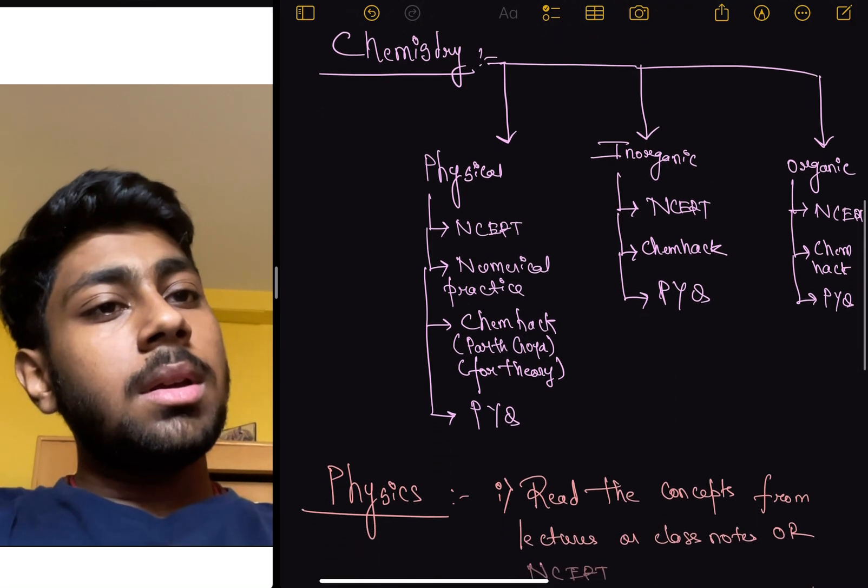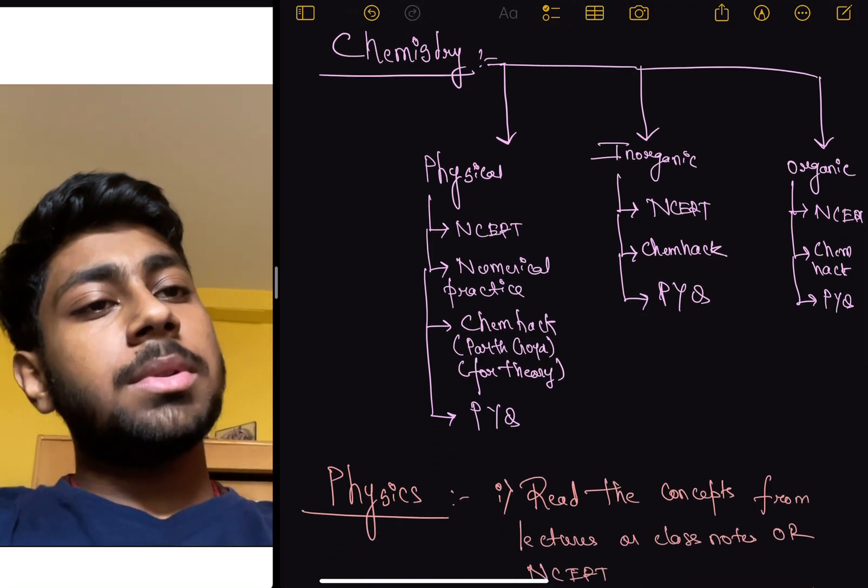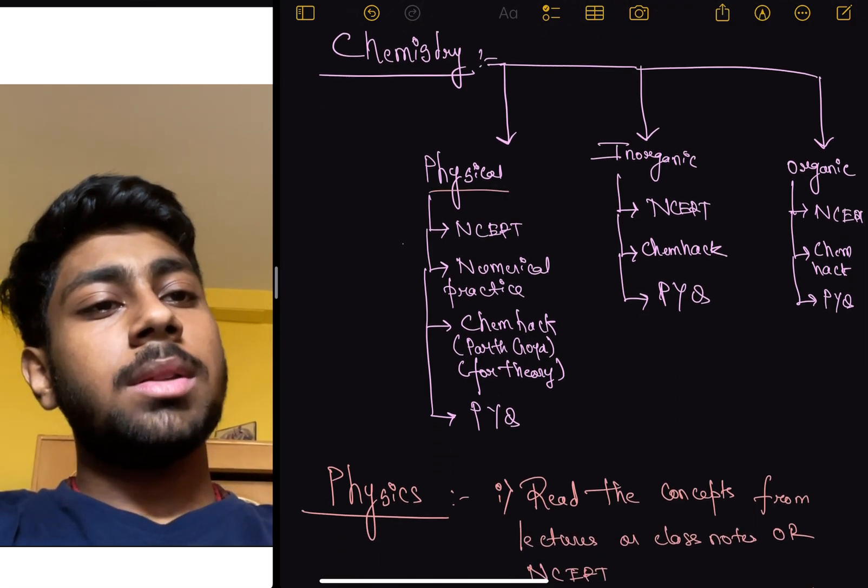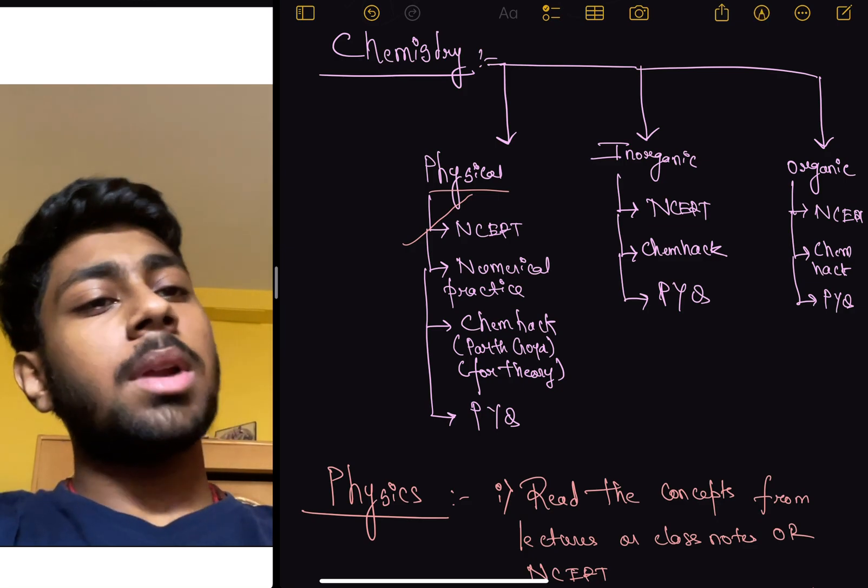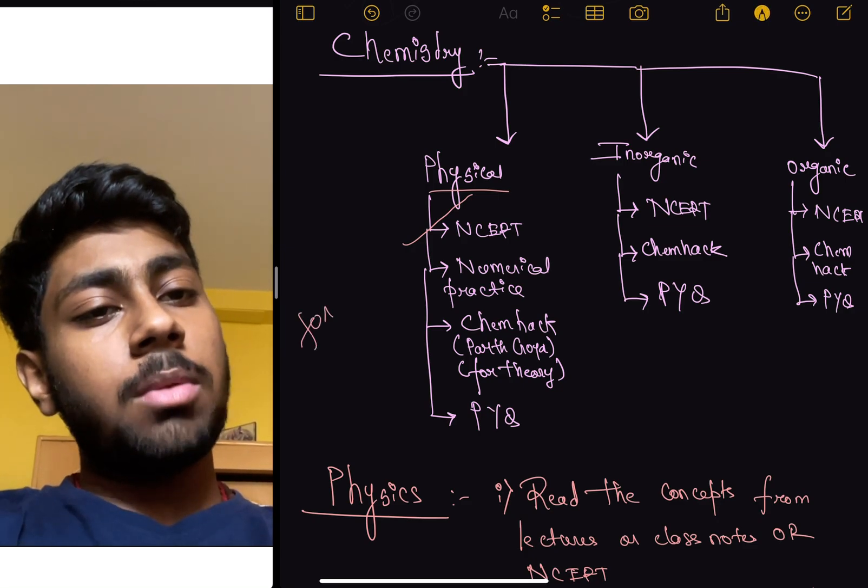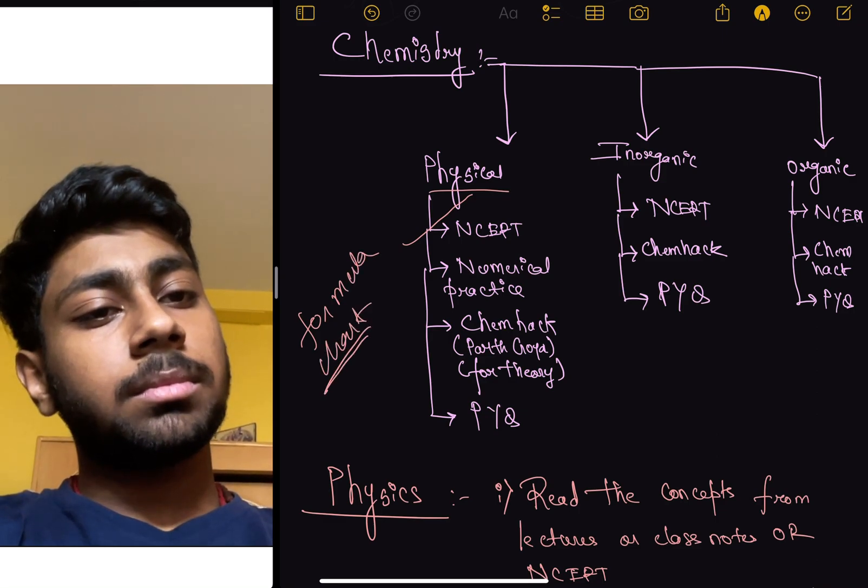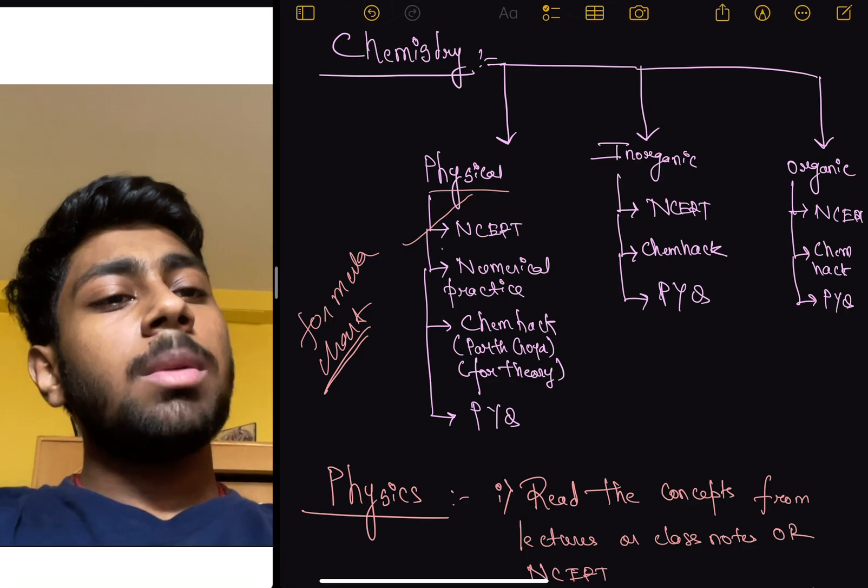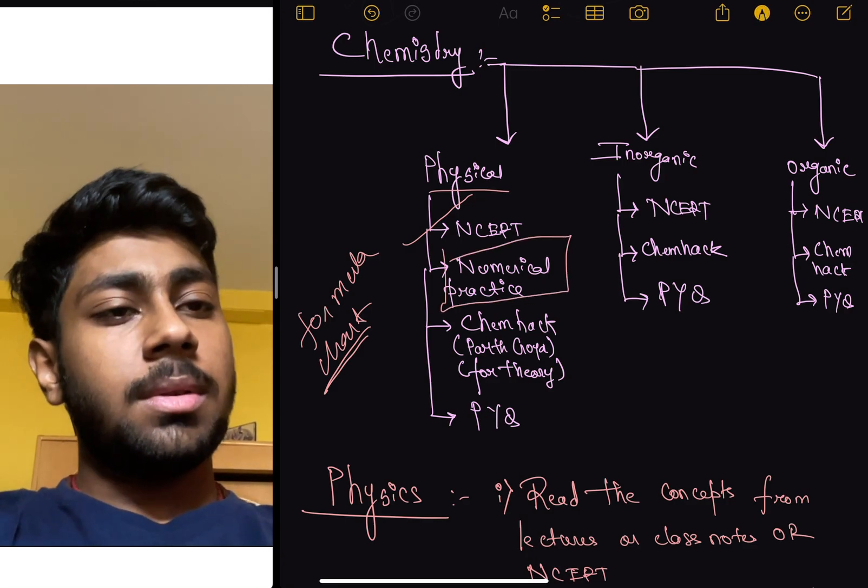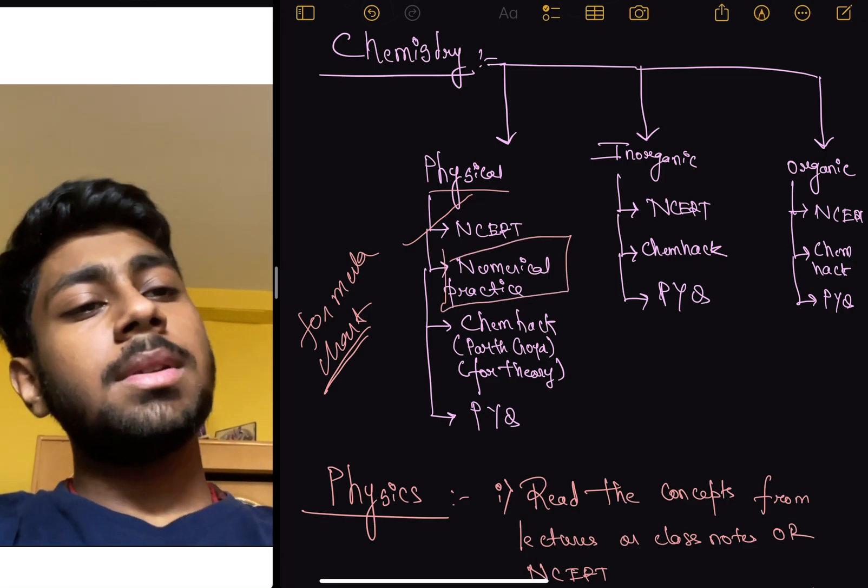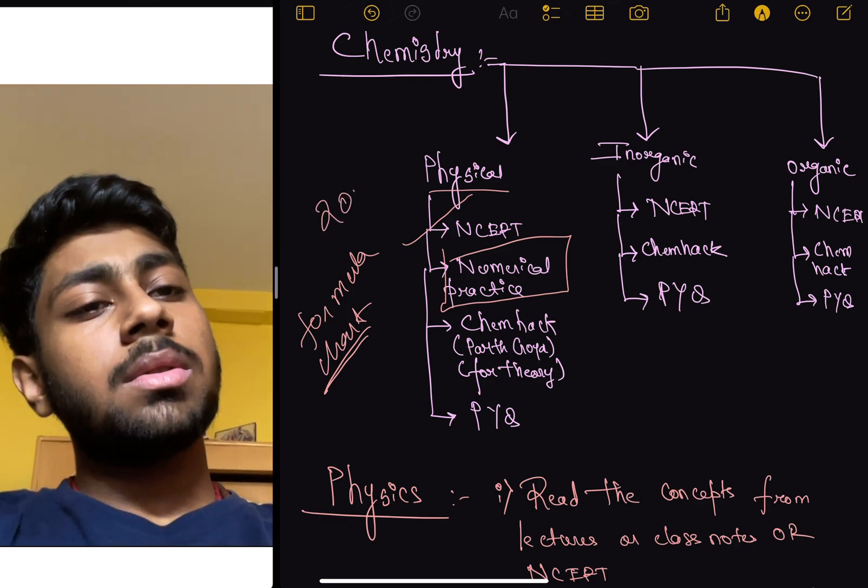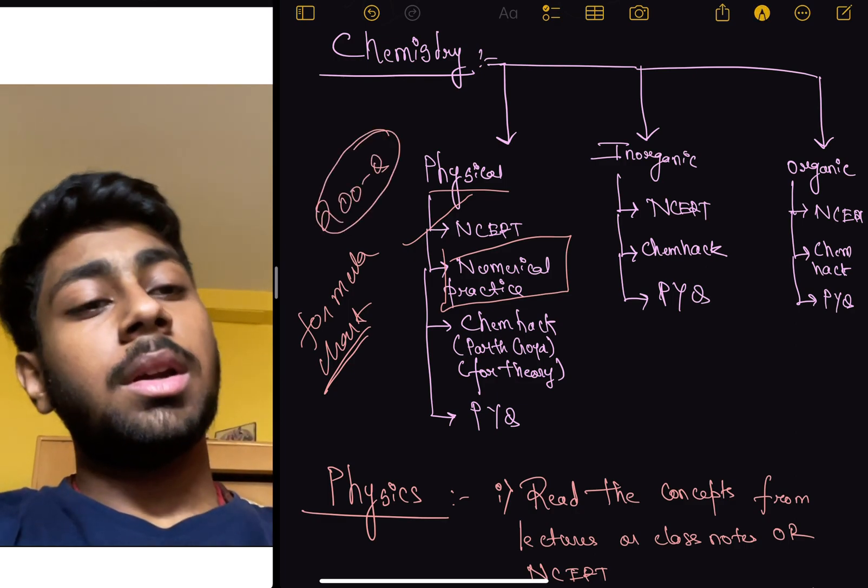In chemistry, for the physical chemistry part, I suggest you do NCERT for the theoretical part and make formula charts. It's very important. Do maximum numerical practice, nearly 200 questions of each chapter to get a good grip of your concepts.